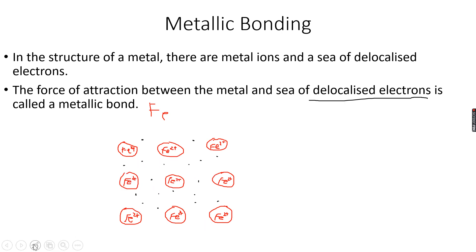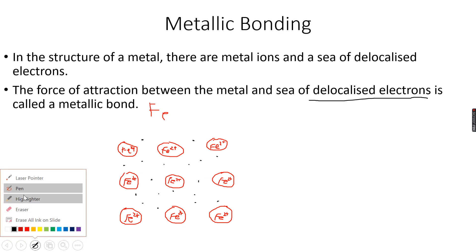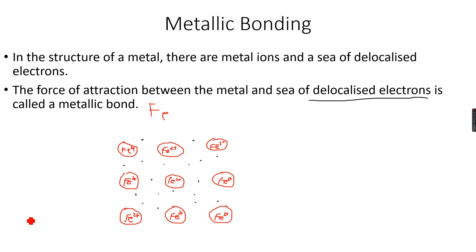A metallic bond is the force of attraction between the metal ions and the sea of delocalized electrons, because positive and negative attract. So the force of attraction between the metal ions and the sea of delocalized electrons is called a metallic bond.